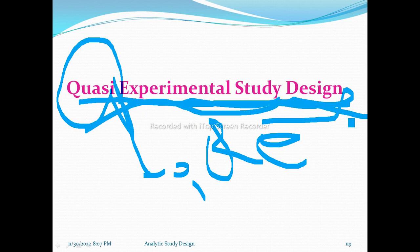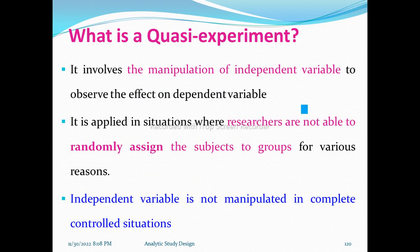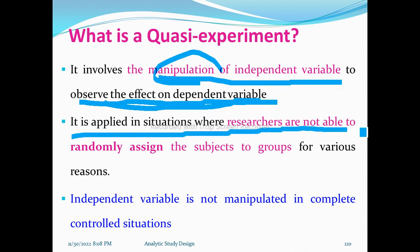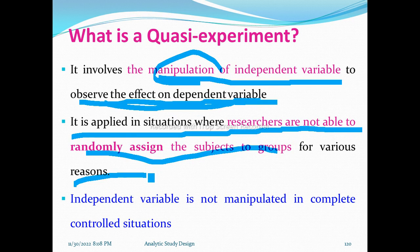A quasi-experimental study involves the manipulation of independent variables to observe effects on dependent variables. It is applied in situations where researchers are not able to randomly assign subjects to groups for various reasons. In the case of experimental studies, researchers are not able to randomly assign subjects.